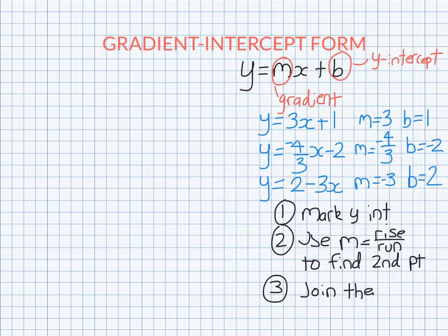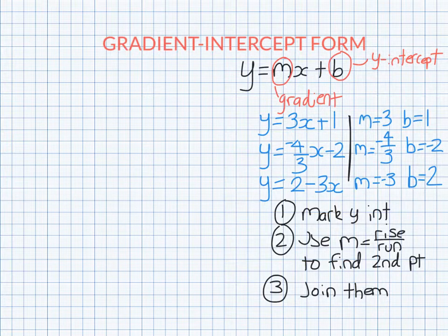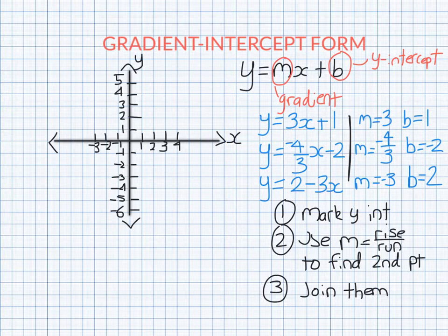And when you've found two points, all you need to do is join them up. So now we're going to look at graphing these lines that we've got here using gradient intercept form. So we set up our axis as normal.